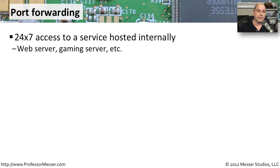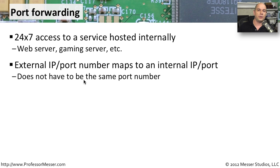Some small or home offices may have services inside — like a web server or file server — that you want others to access. In those cases, you may want to consider a port forward. This allows you to set up 24x7 constant access to a particular server. You take the external IP address and port number and forward that to an internal address, making that internal IP accessible from outside your network.